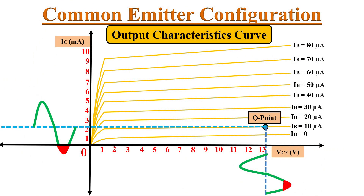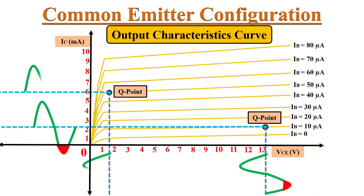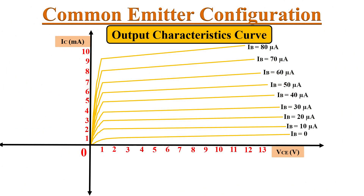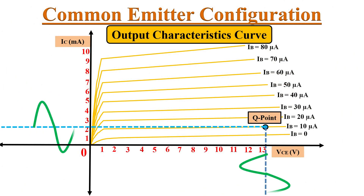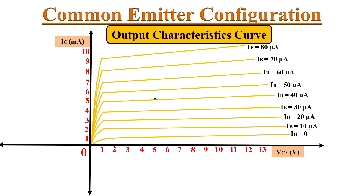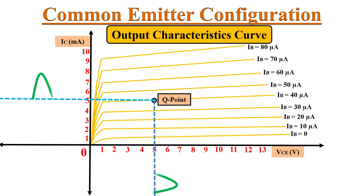Therefore, whenever the operating point is near the saturation or cutoff region, it may lead to non-linear distortion in the output waveform. If the BJT is operating near the breakdown region, that operation must be avoided. On the other end, when the operating point is at the center of the output characteristic curve, the input signal will be amplified correctly without any distortion, and the gain of the BJT is almost constant in this region. So, for small signal amplification, the Q point must be at the center of the output curves.